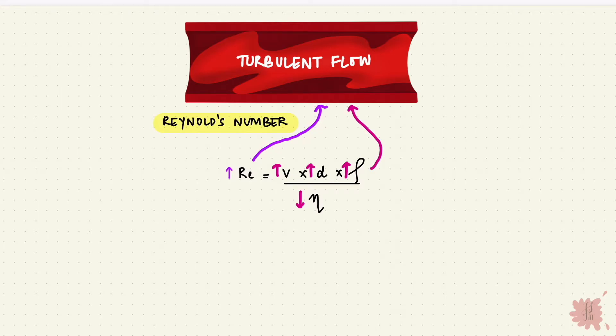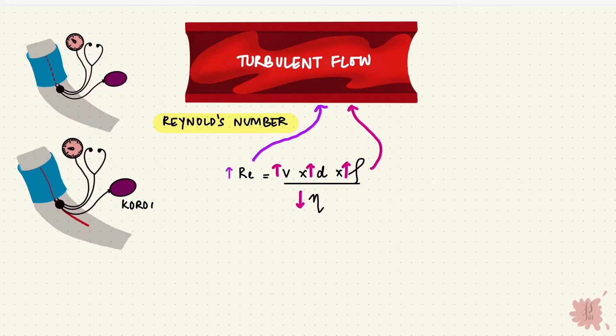An example of turbulent flow is during blood pressure measurement. When the cuff pressure goes lower than the arterial pressure, you hear sounds, and that's from turbulence.